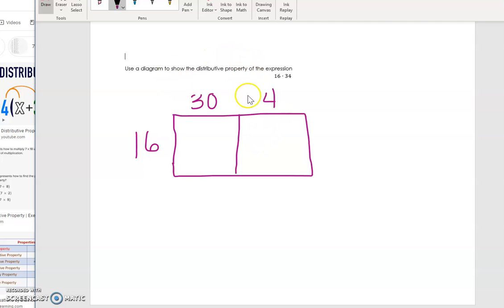And so to show the distributive property on the inside, I'm going to show that this would be 16 times the 30, and this would be 16 times the 4. And I'm not looking for you to get the answer. I just want you to show me how you could break this expression up into its area model form just like this.